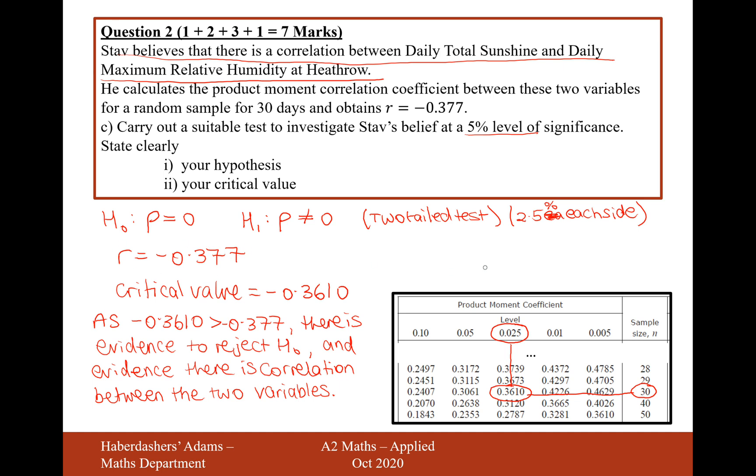The PMCC value is closer to minus 1, which is the negative correlation than the critical value. So it's on the side of... it's more on the negative side of the critical value, closer to minus 1. So therefore, it's closer towards that negative correlation that we're looking for. So there is evidence that the two variables are correlated. So there we are, that's the answer to part C.